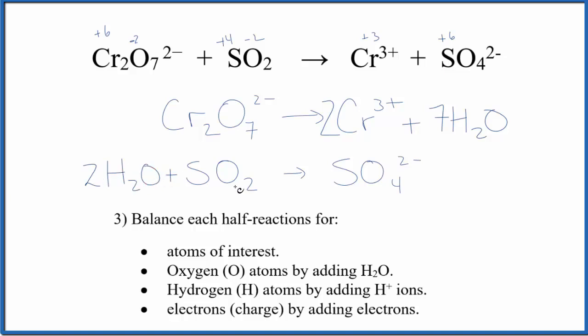Now we can add these hydrogen ions H+ to balance out the hydrogens. Seven times two is 14, so I need to add 14 hydrogen ions here. That'll balance the hydrogens. Down here I have two times two is four, so let's add four hydrogen ions here. We're done with that, those are balanced.